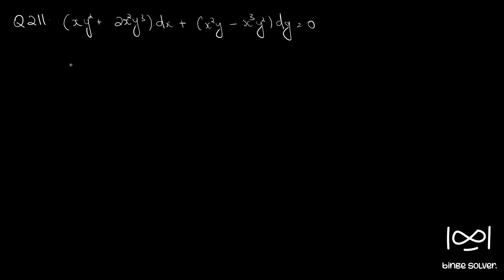The given question is in the format M dx + N dy = 0. First we check whether the given differential equation is an exact equation. We use the necessary and sufficient condition: ∂M/∂y = ∂N/∂x.